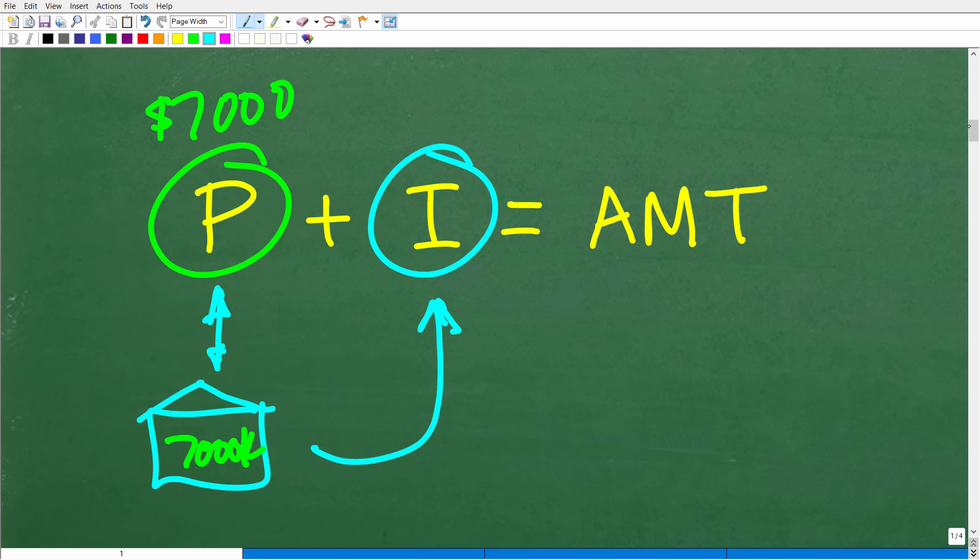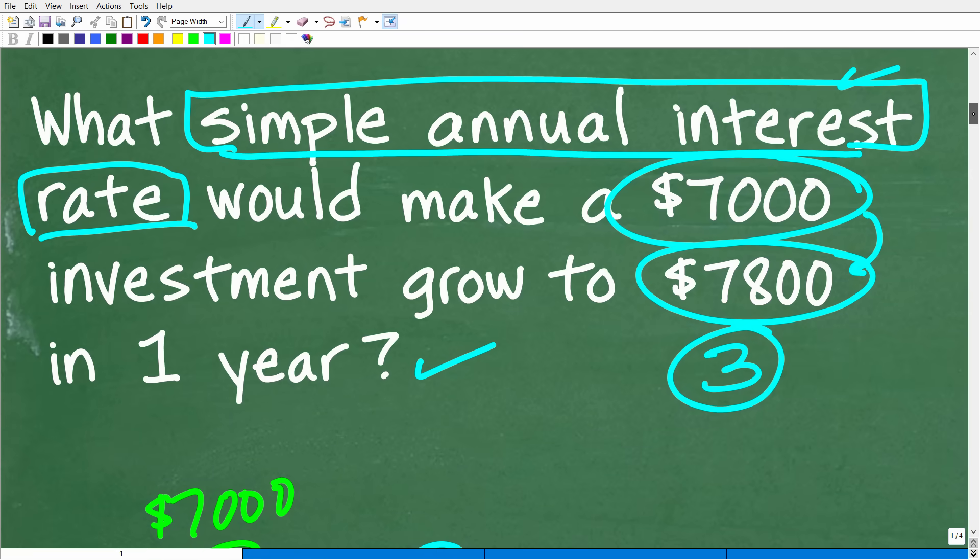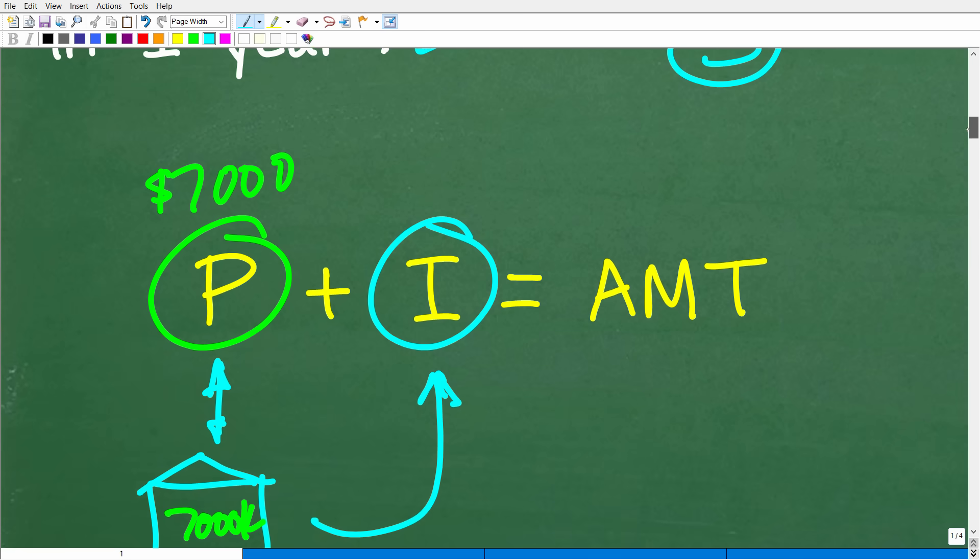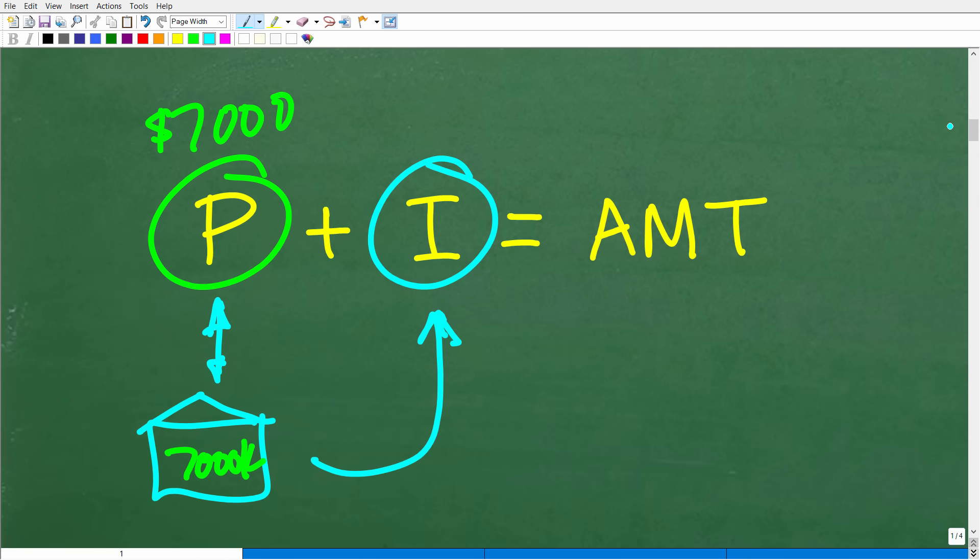So, the interest is going to be the amount of money the bank is going to pay you or some other financial institution for keeping your money in that institution for a set period of time. Now, what we're talking about in this particular problem is something called simple annual interest. Now, there's all different sorts of interest rates. There's things called continuous compound interest, quarterly compound interest. It gets into be a pretty big topic.